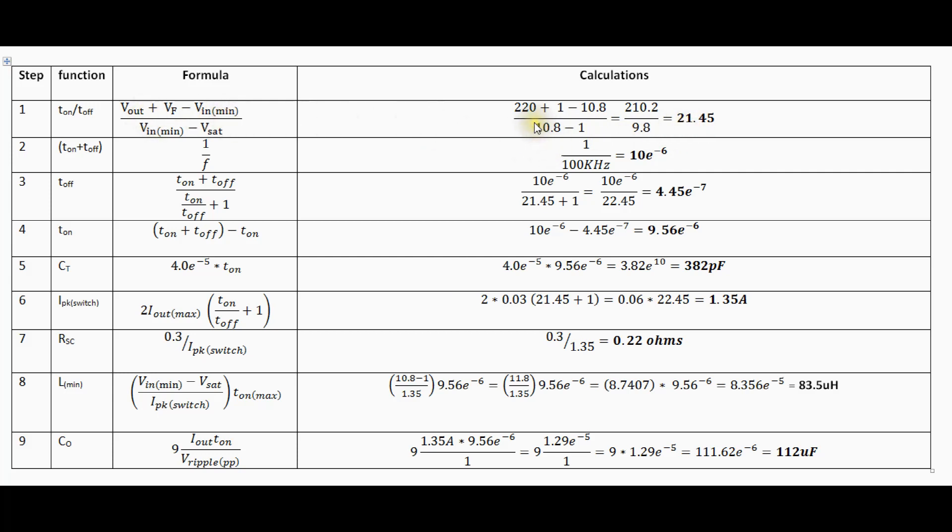But so basically you just feed the numbers in which I've done here and so tOn divided by tOff is 20 the ratio is 21.45 and here f is the frequency which you want to run it at.